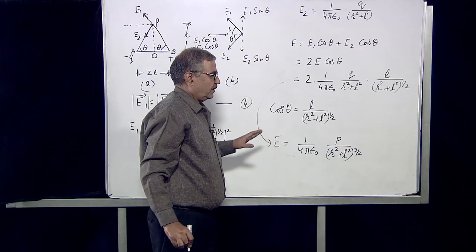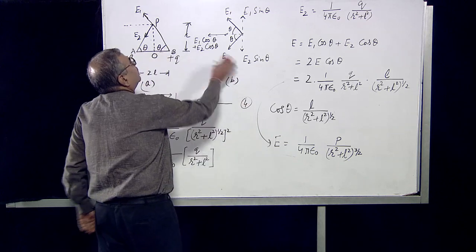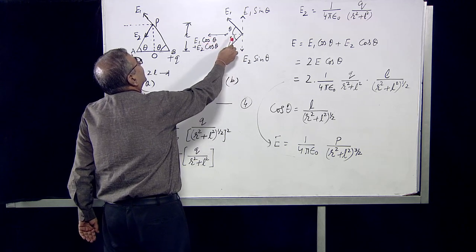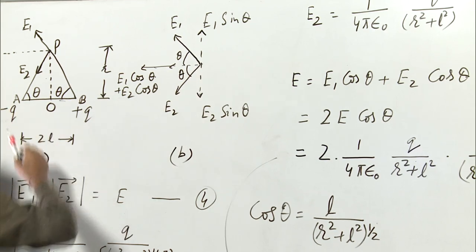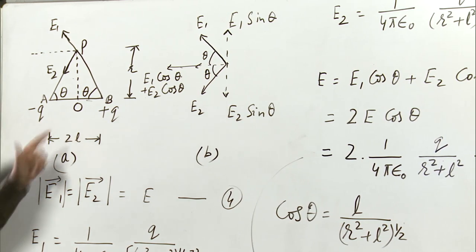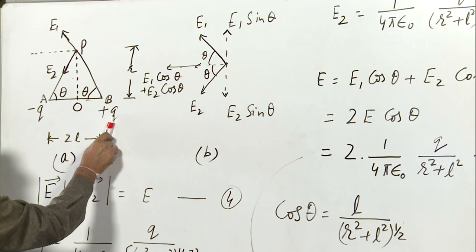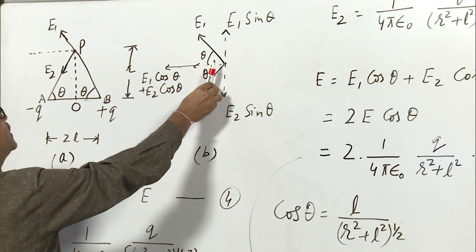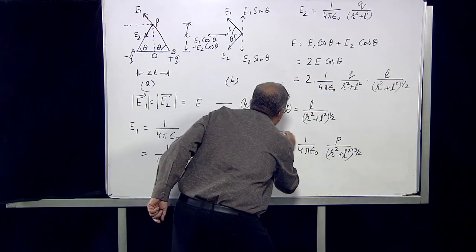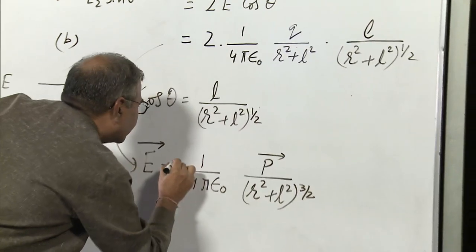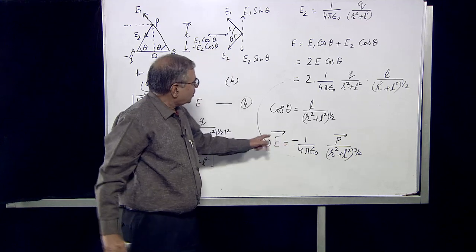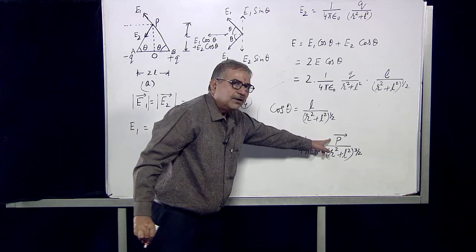What will be the direction of this electric field? The direction of the resultant electric field is from right to left, meaning it is directed opposite to P, because P is directed from minus q to plus q whereas the net electric field is directed from right to left. So E is written with a minus sign because E and P are directed along different directions.